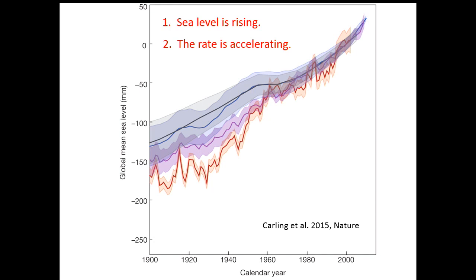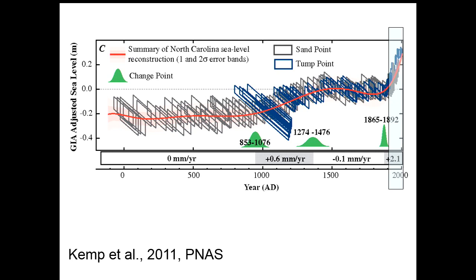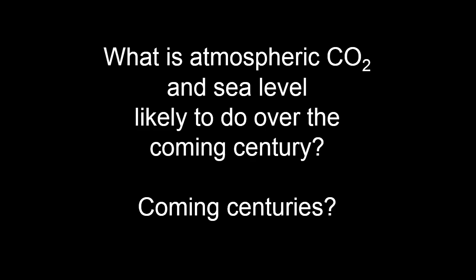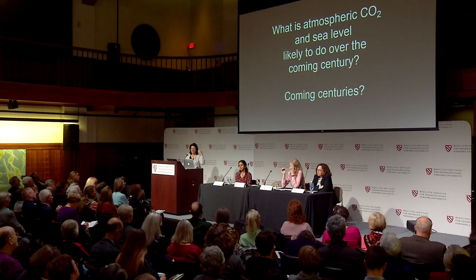This data from a postdoc at Harvard, Carling Hay, shows the sea level time window from 1900 to 2000 placed in the context of the last 2,000 years — the rise due to human-induced global warming is clear. What is the atmospheric CO2 and sea level likely to do over the coming century? This is not a scientific question that scientists can answer alone — it's completely dependent on the individual and collective actions of citizens and their governments.